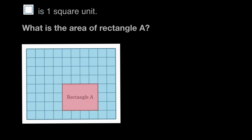This square is one square unit, so what is the area of rectangle A? The first thing we're told is that each of these little squares equal one square unit, and then we're asked to find the area of rectangle A.